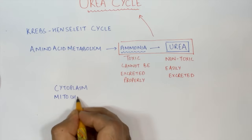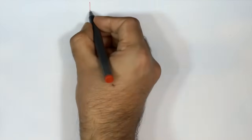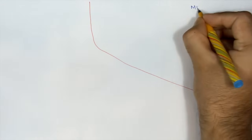Part of the urea cycle takes place in the cytoplasm and part of it takes place in the mitochondria. Let's suppose this part of the cell is the mitochondria and this part of the cell is the cytoplasm.